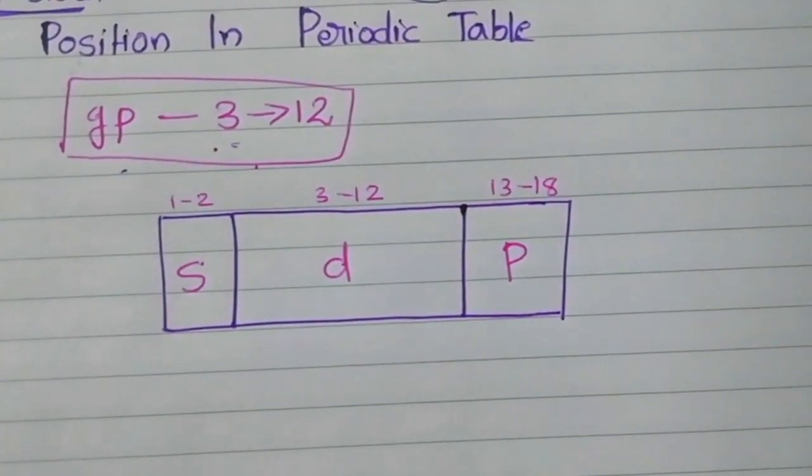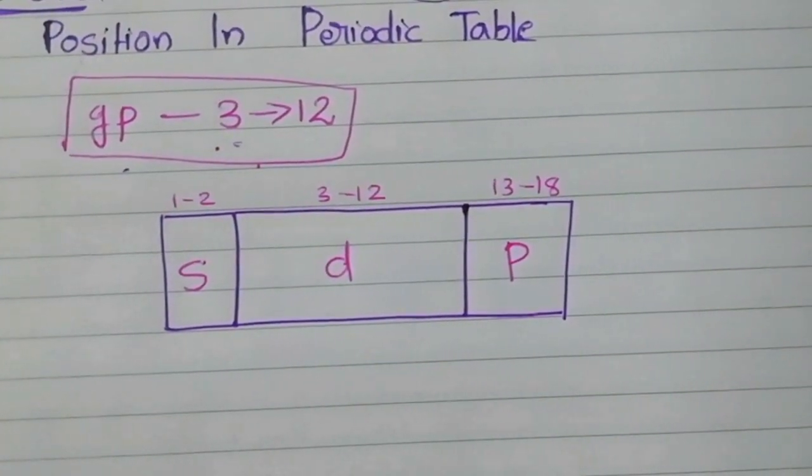See this picture — it clearly shows the first section is S block, then the middle one is D block, and the last one is P block. And below this main periodic table we can see some elements arranged separately — they are actually the F block elements, which we will study later.